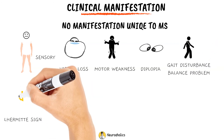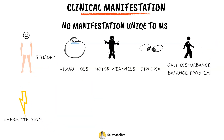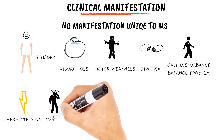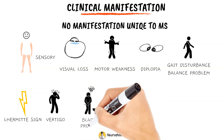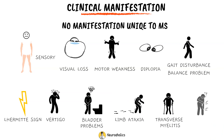Additional symptoms include Lhermitte's sign — electric shock-like sensations that run down the back and/or limbs upon flexion of the neck — vertigo, bladder problems, limb ataxia, acute transverse myelitis, and pain.